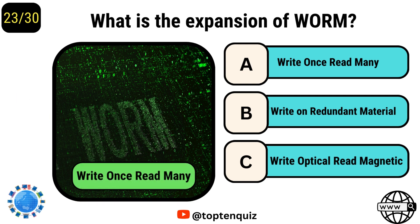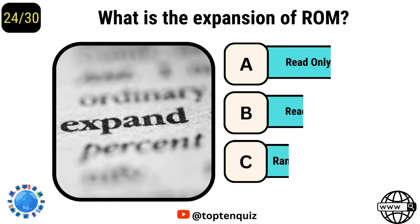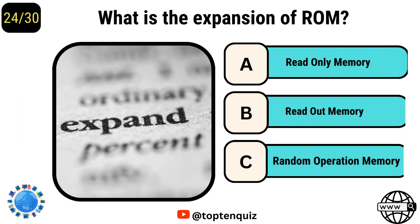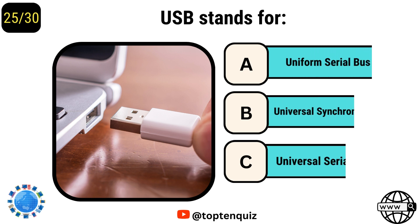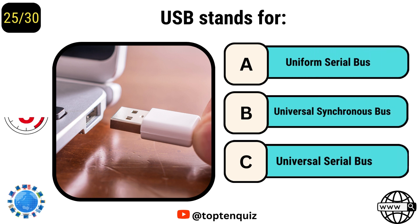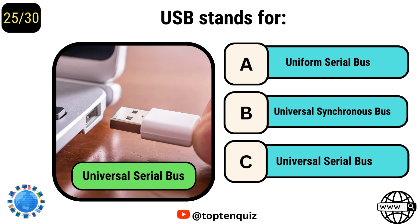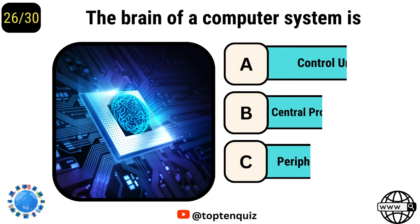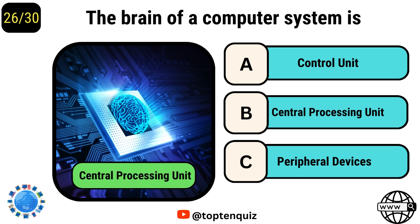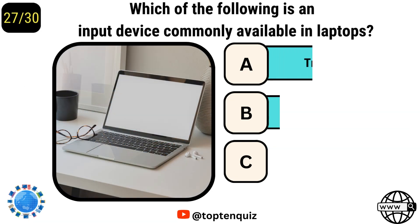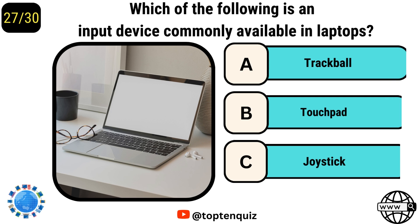What is the expansion of WORM? Write once read many. What is the expansion of ROM? Read only memory. USB stands for universal serial bus. The brain of a computer system is the central processing unit.